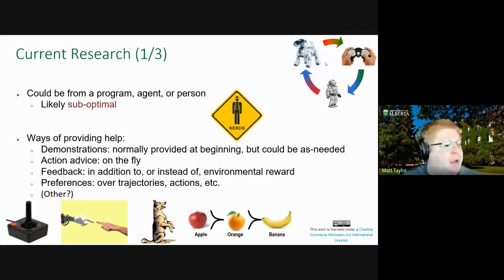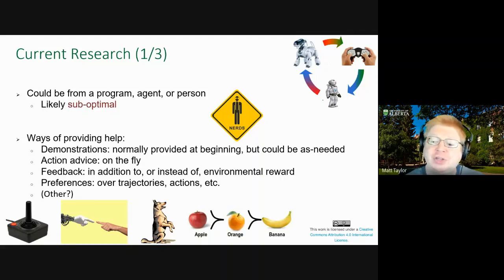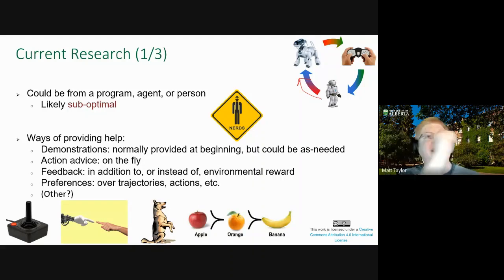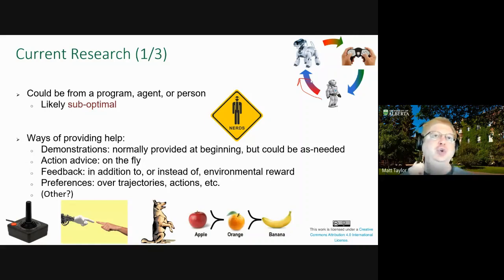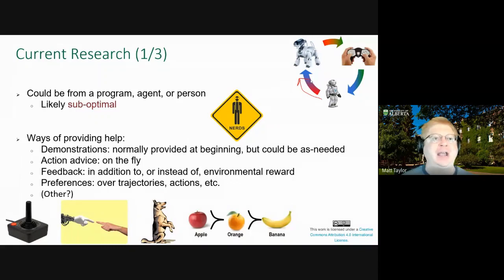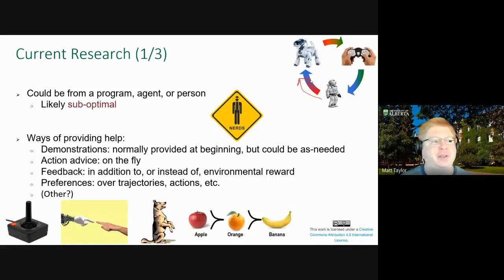One agent helping another to learn: if those agents are close enough, you can do transfer learning — just take the brain out of one and adapt it to the other. But if they are too different, you might not be able to do transfer learning because they just don't have that robust communication channel, or they're simply so different that transfer won't work.